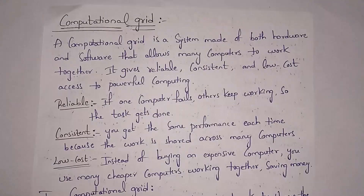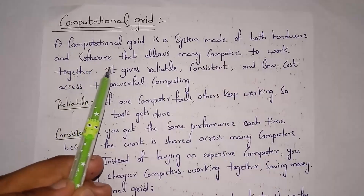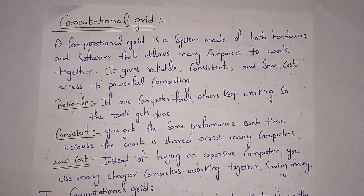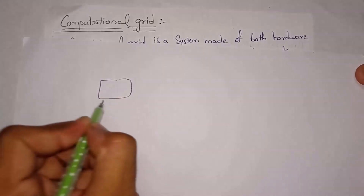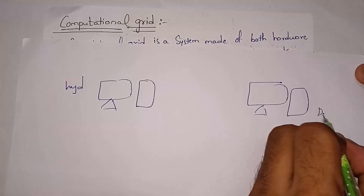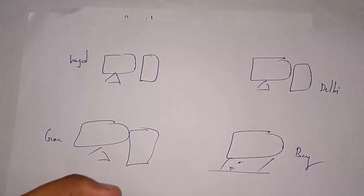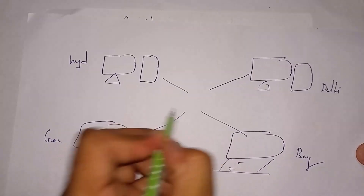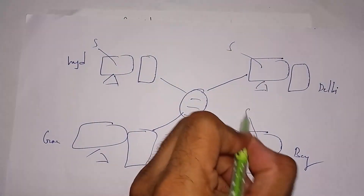A computational grid, also called grid computing, is a system made of both hardware and software that allows many computers to work together, giving reliable, consistent, and low-cost access to powerful computing. For example, computers located in Hyderabad, Delhi, Bangalore, and Goa are connected to each other through the internet. In addition, all these computers must have one common software installed in order to communicate with each other.